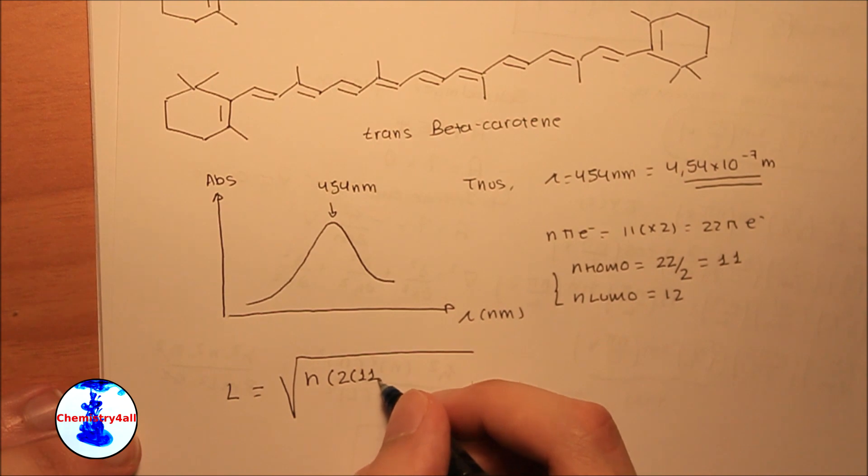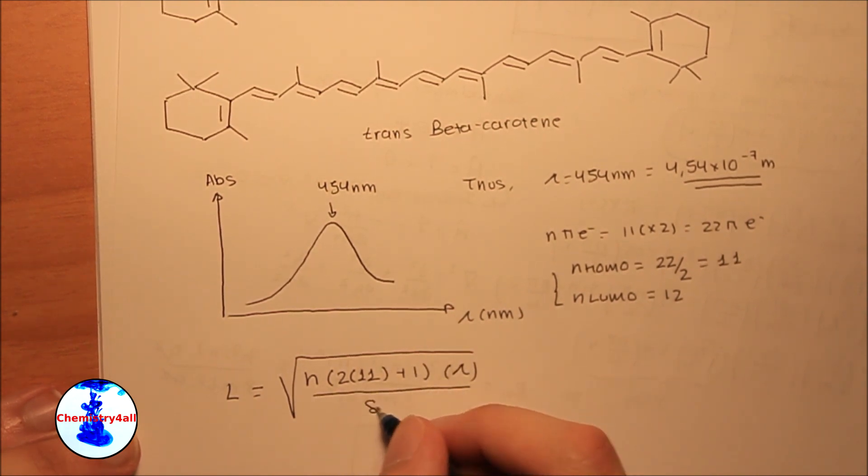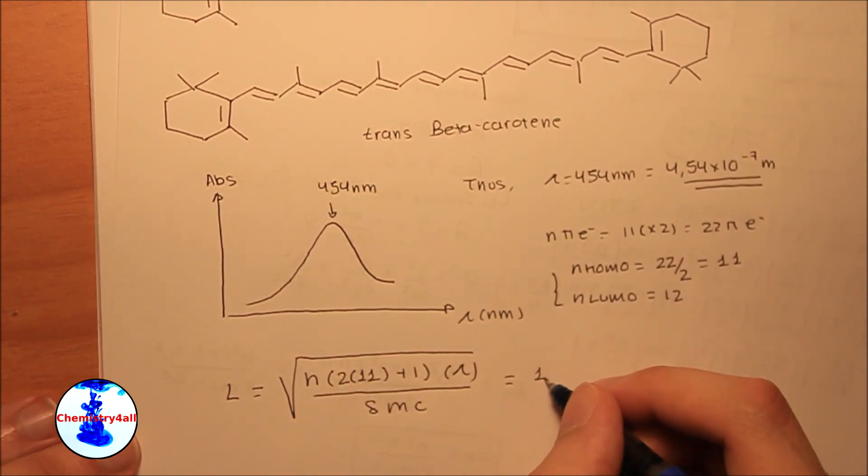Finally, using the experimental data in combination with the previously derived equation, we got a total length of around 18 Angstroms.